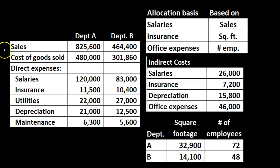Here is our data. We have sales, cost of goods sold, and direct expenses which include salaries, insurance, utilities, direct depreciation, and maintenance. We are not focusing here on the direct expenses — those are items we can apply directly to each department, so there is not much of an issue. We are considering those items that we cannot apply to a department as easily because they are used by multiple departments.